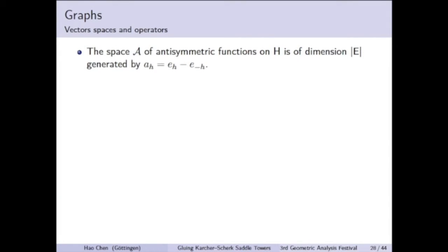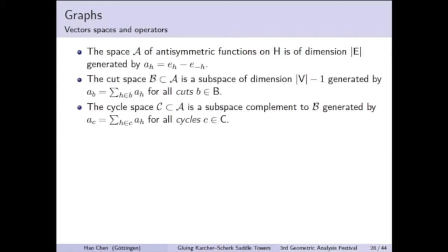Now let us recall the notions of cut space and cycle space. A cycle is a sequence of distinct edges that form a path with no repeating vertices. Given a subset of vertices, a cut is the set of edges with exactly one end in this subset.